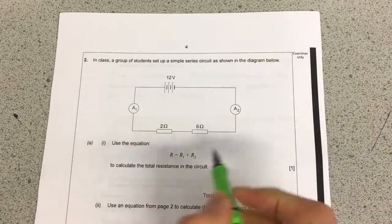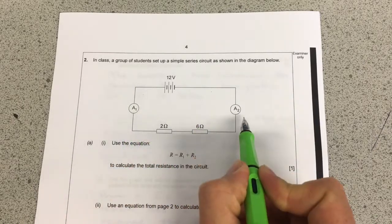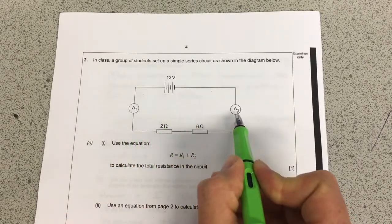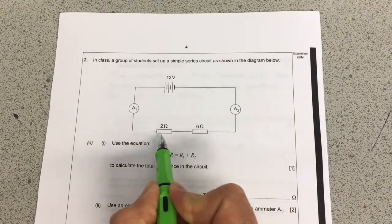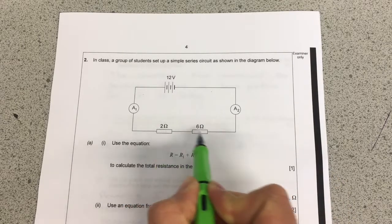So we have a circuit diagram here. The things to notice are that we've got two ammeters, ammeter 1 and ammeter 2 on the two sides of the circuit. Then we've got two resistors here. These resistors are connected in series with each other.